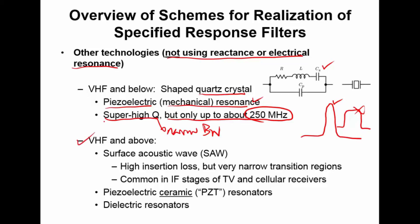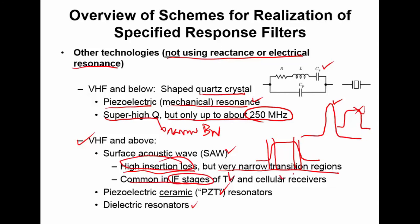At higher frequencies, other techniques come up. Surface acoustic wave filters use an acoustic, as opposed to mechanical, resonance. They have very high insertion loss — typically on the order of 10 dB — but very sharp transition regions, making them great for creating bandpass responses with sharp transitions. Because of the high insertion loss, they show up in intermediate frequency stages in TV receivers and cellular receivers, where they play an important role.